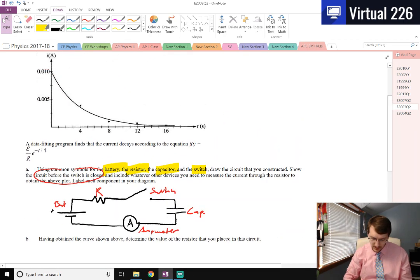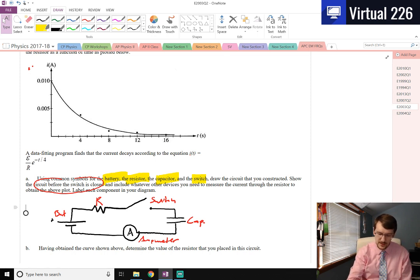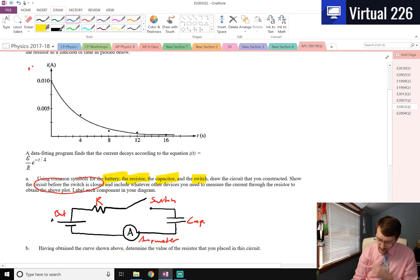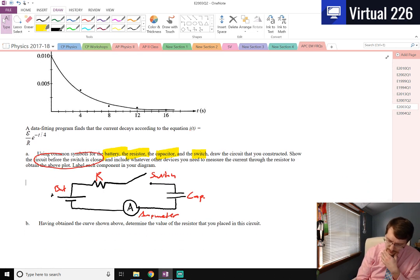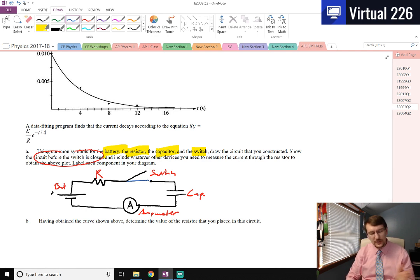This was a fun one. Having obtained the curve shown above, what's the value of the resistor that we placed in the circuit? Ooh, this is a tough one. Well, let's say we close the switch. We close the switch. This is an initially uncharged capacitor, so when we close the switch, an uncharged capacitor is going to act like a wire.